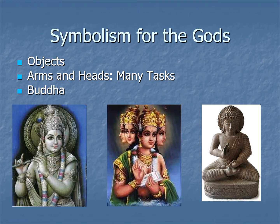Buddha also has rich symbolism associated with his images. Sometimes you'll see a small amount of hair on top of his head, which depicts his soul coming out of his body. He'll have a dot between his eyes, which is a dot of wisdom. His ears are often very long — these elongated ears show that he has heightened perception. His hands are often in symbolic gestures, making a particular symbol. So each of these statues is very rich in detail in terms of symbolism and objects.